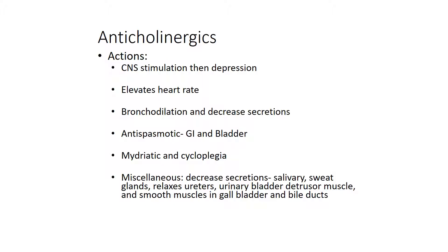The actions of anticholinergics on the central nervous system: we initially start with a stimulation of the CNS, but then it becomes depressed. It increases the heart rate, and we have bronchodilation and decreased secretions. We have an antispasmodic effect on the GI tract and the bladder.